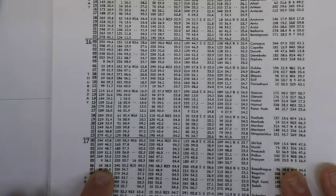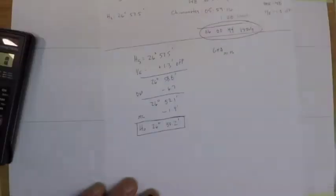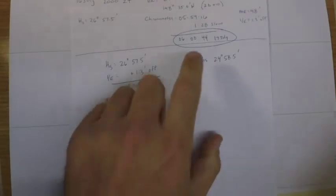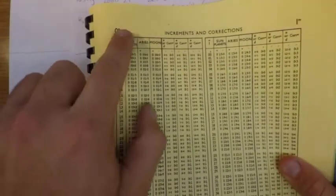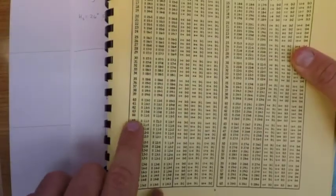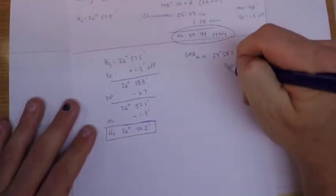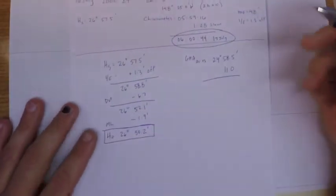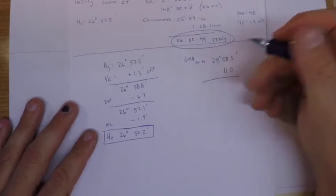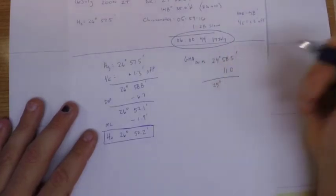Right there, 24 58.5. We were a little behind Aries so zero minutes 44 seconds. 44 seconds for Aries we'll add 11 minutes there so that's going to give us 25 degrees 09.5 minutes.